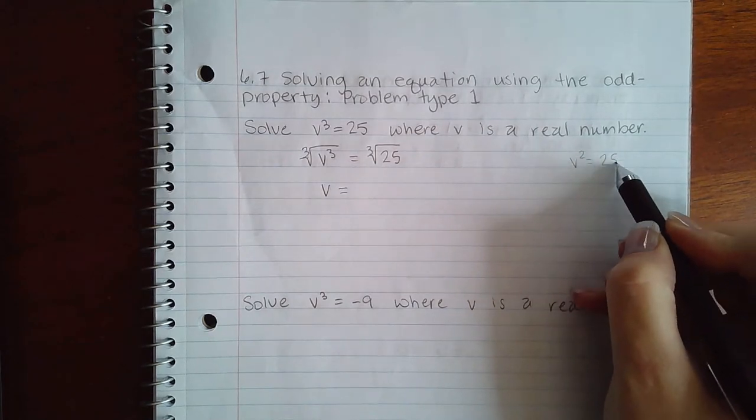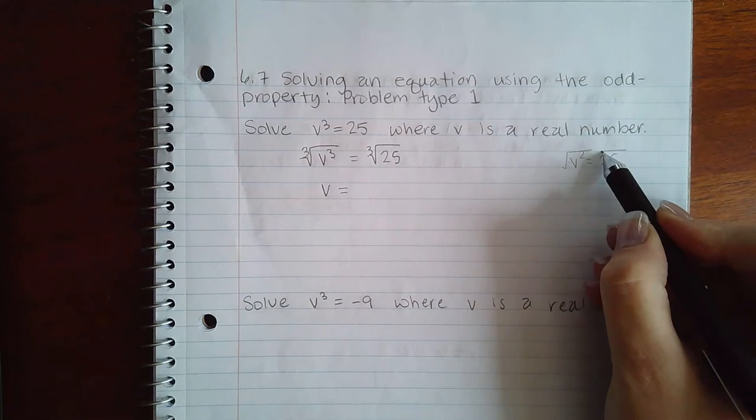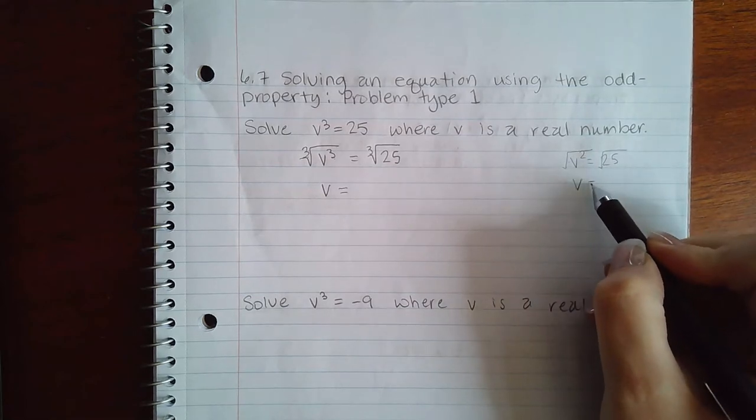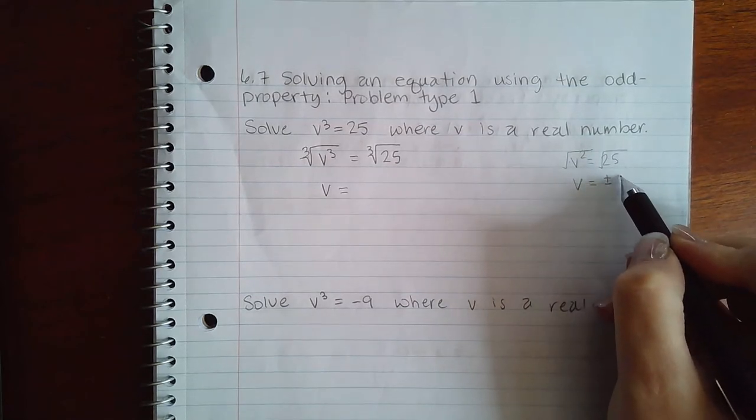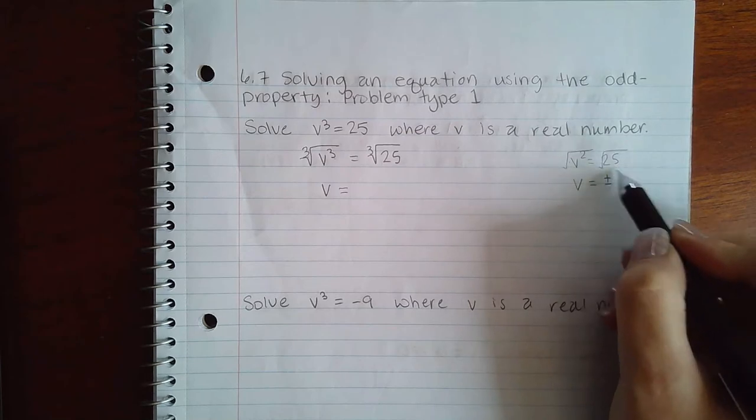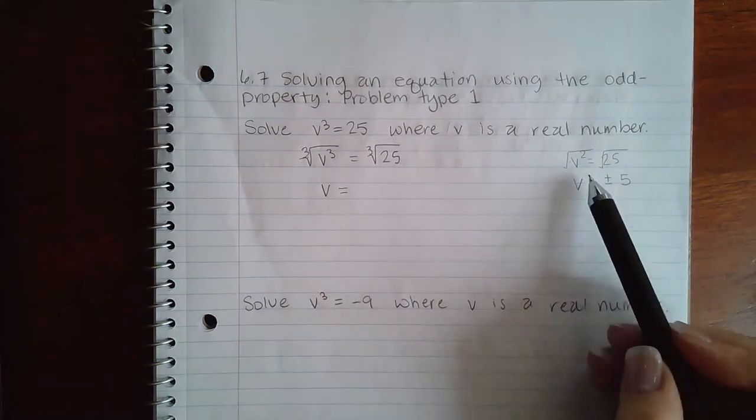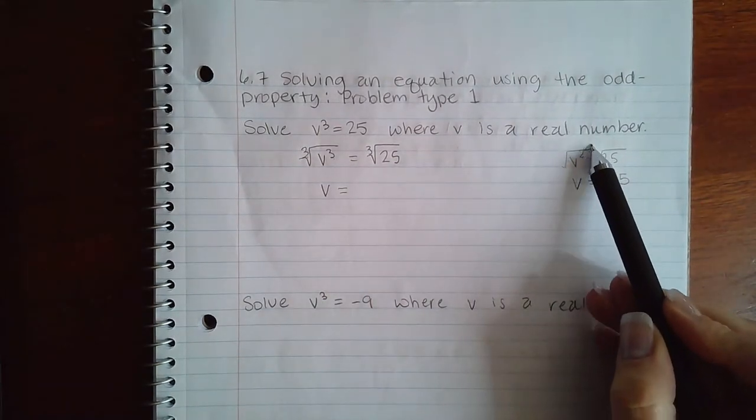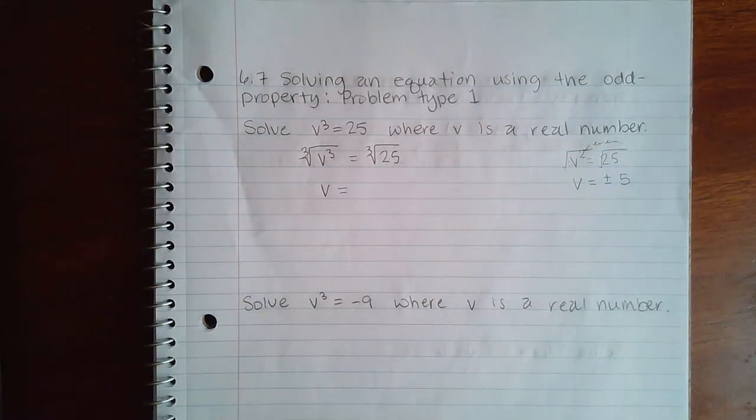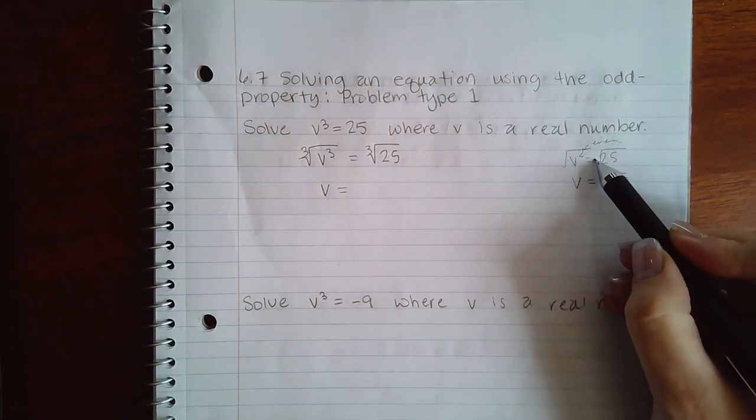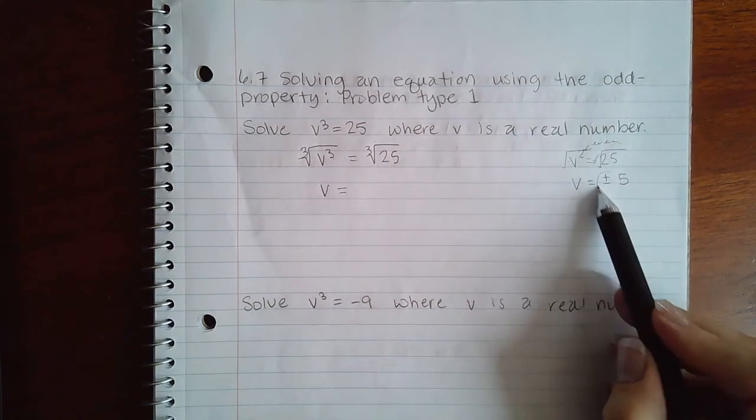For instance, v² = 25 and you take the square root on both sides, eventually you end up with v but you end up with plus or minus whatever the square root of 25 is. In this case it happens to be 5. And so when it's a square, when this is an even power and you take an even root, you get this plus or minus.